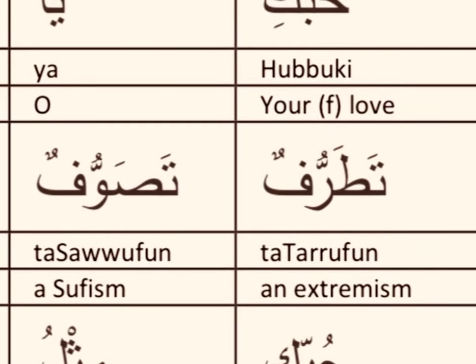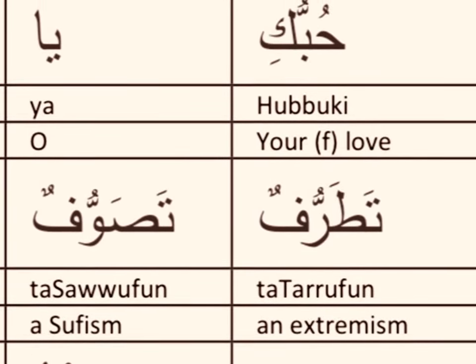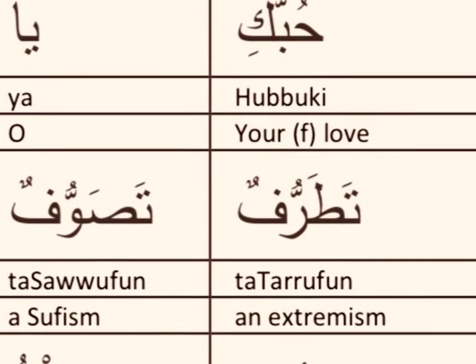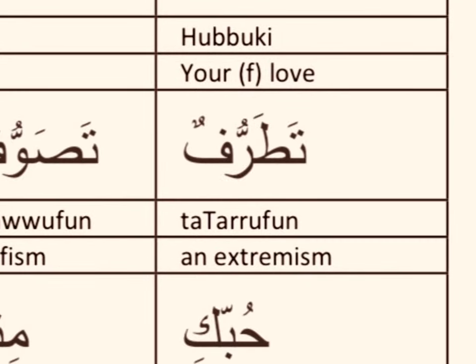Next, we have the rest of the sentence. What is your love — or what is loving you? It is 'tatarrufun'. The root word is 'taraf', which means edge. 'Tatarruf' is the fifth form verbal noun, and it develops the idea of going all the way to the edge, to the extreme. So loving you is extreme — it takes me all the way to the edge.